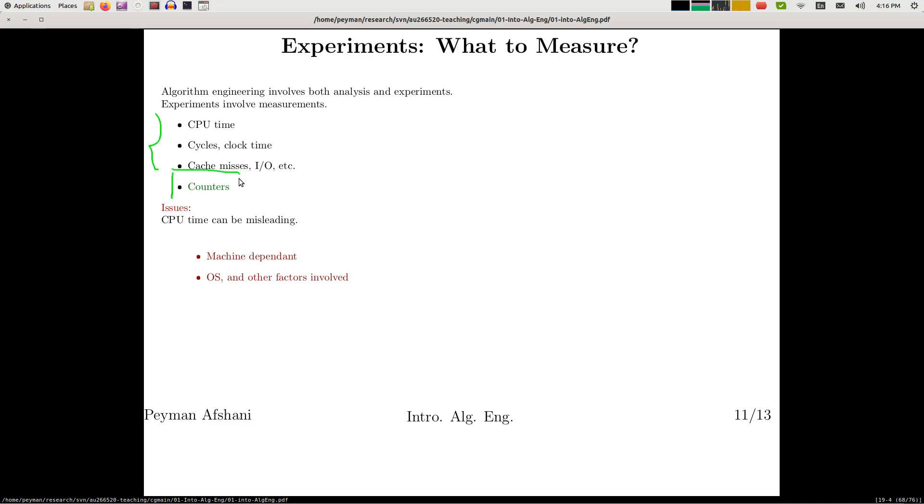And the thing about counters is that since they're software counters, they're kind of oblivious to the dependency on the machine. If you're counting a number of comparisons in your code, it doesn't matter on which hardware you're running it. It's just going to give you the same result.